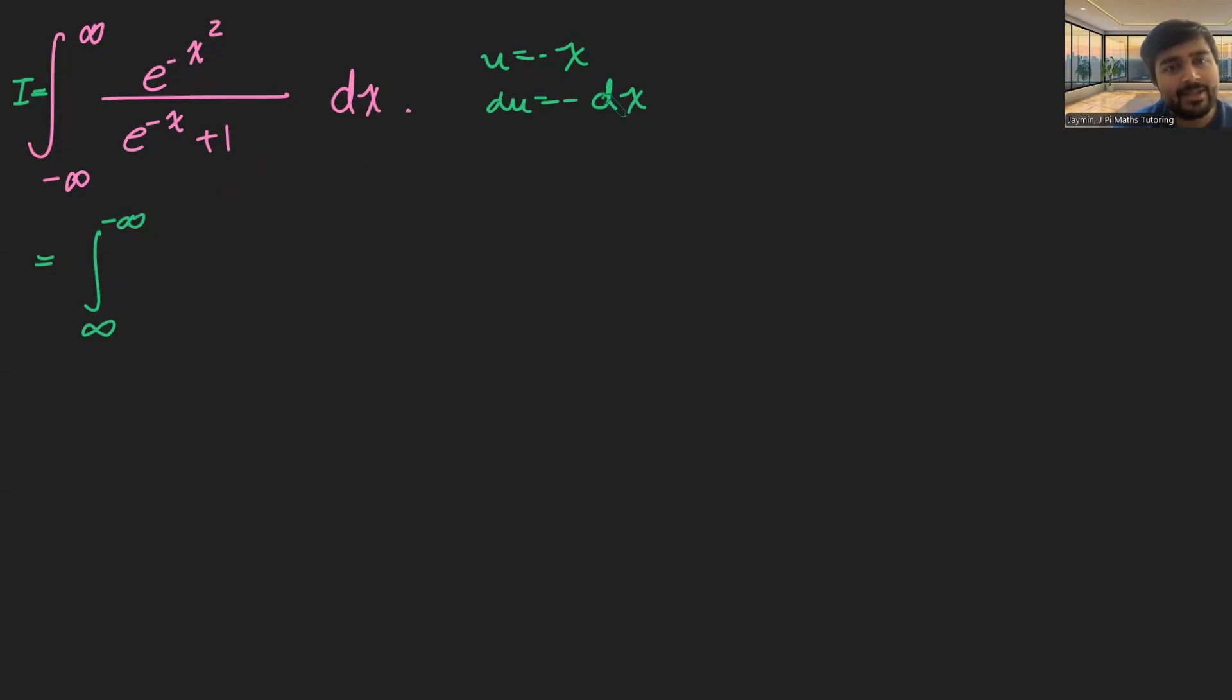e to the minus x squared, well, x squared is just the same as u squared. So this would just be e to the minus u squared over e to the u and then plus 1. And then dx will become du times minus 1.